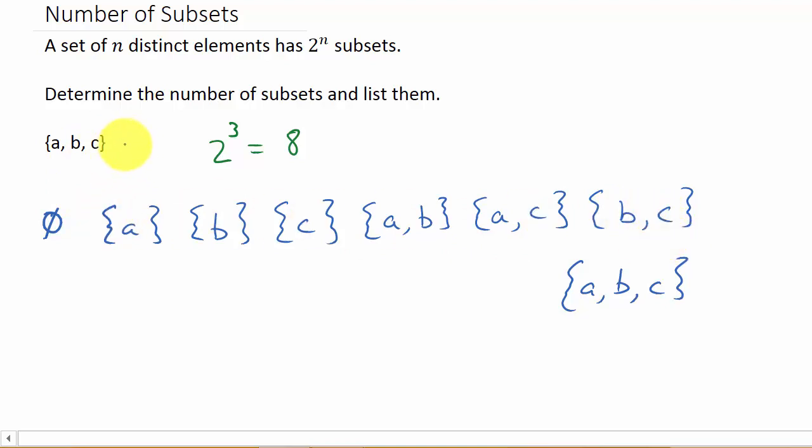You know, if you had one more, let's say you had a D here, then you would just list A, B, C, D. And then you would have A, B, A, C, A, D. And then you would have B, C, B, D. And then you would have C, D. And then of course, the set itself.